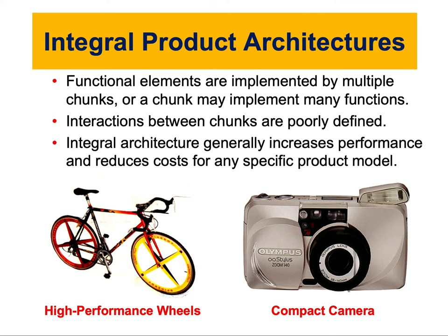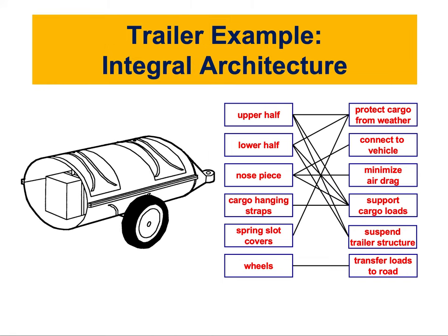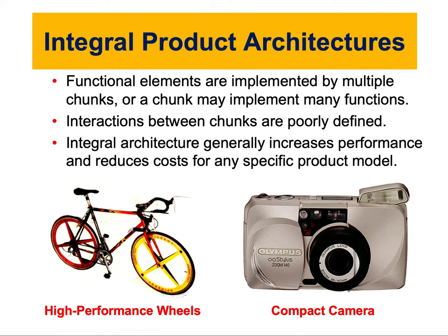The other type of architecture is integral architecture. In integral architecture, functional elements are implemented by multiple chunks, or chunks may implement many functions. Recall the trailer example from the previous video — that represented the simplest modular architecture. In the integral version, many chunks perform multiple functions, and some functions are performed collectively by multiple chunks. The interactions between chunks in integral architecture are fully defined.